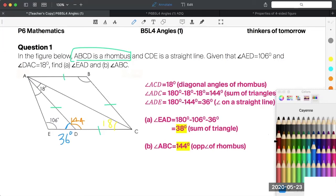And then can you see that EAD is part of this triangle? So 180 minus 36 minus 106. That will be the answer - 38 degrees.